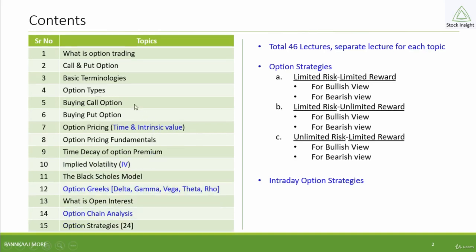These are the topics covered in this course. Basically, there are two parts: option basics and option advanced. In option basics, we will discuss what is option trading, call and put option, basic terminologies, option types, buying call option, buying put option, then option pricing, time value and intrinsic value, option pricing fundamentals, time decay of option premium, and how exactly the time decay happens.